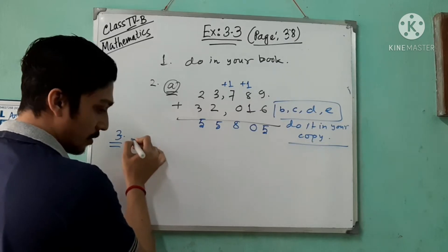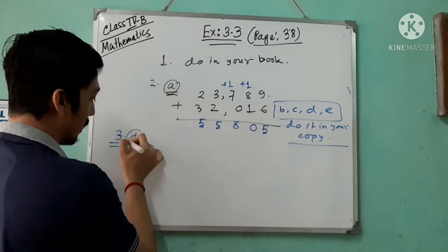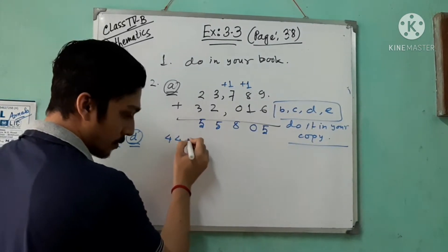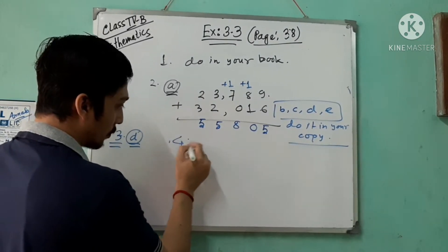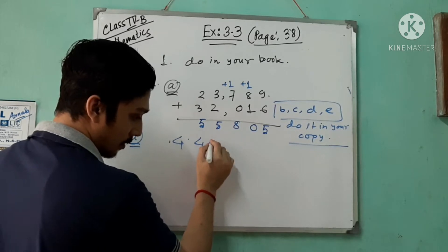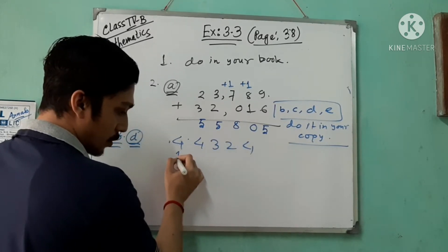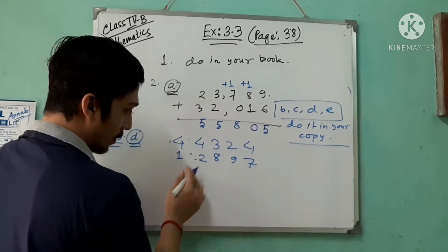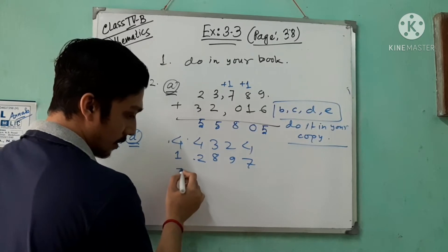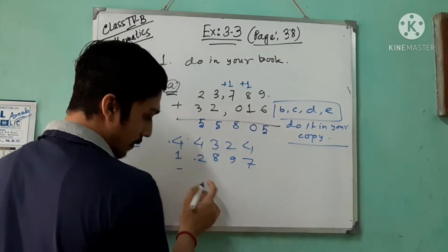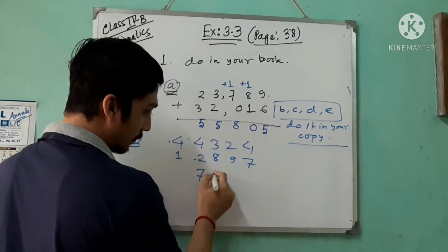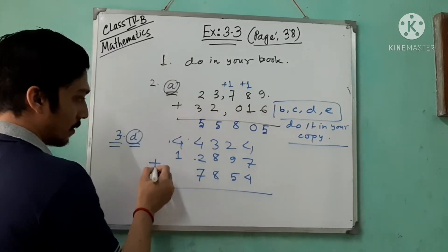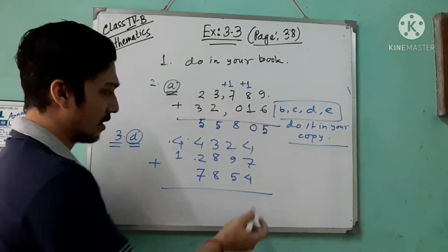I'm doing question number 3d. It is given: 44,324 plus 12,897 and 7,854. We arrange these numbers in columns and add.